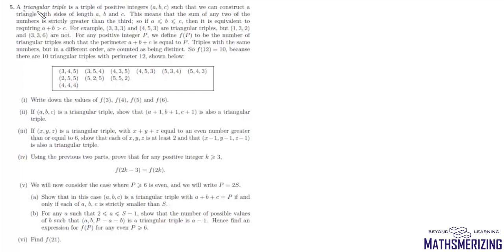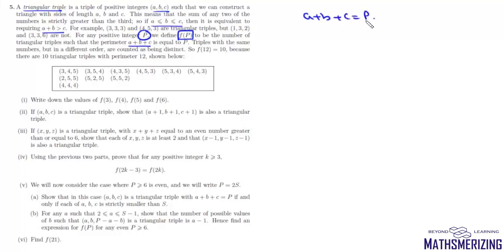In question 5, a triangular triple is a triple of positive integers a, b and c such that we can construct a triangle with side lengths a, b and c. Without loss of generality, if we assume a ≤ b ≤ c, they form a triangle if a + b > c. A function f(p) is defined for a positive integer p such that the perimeter a + b + c = p, and f(p) is defined as the number of triangular triplets that can be formed.